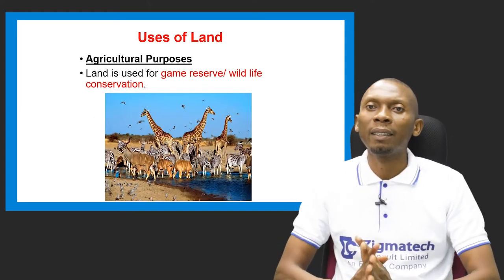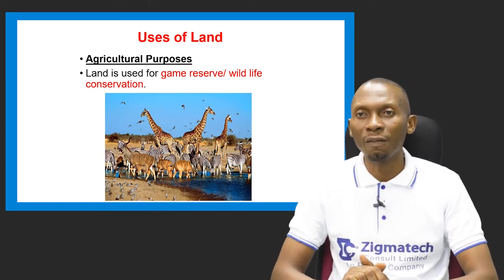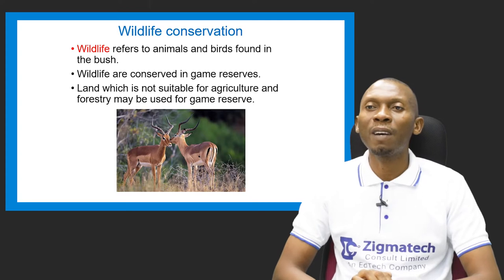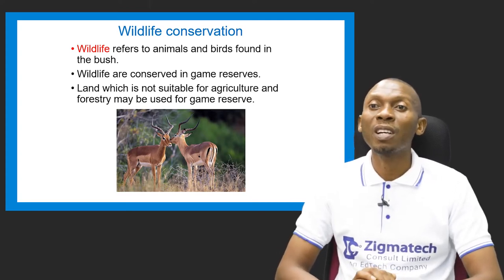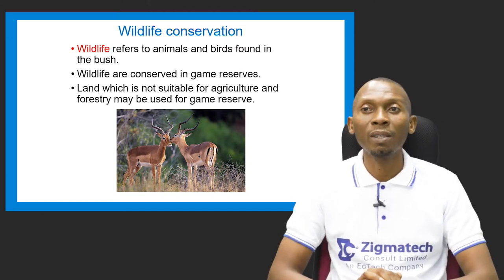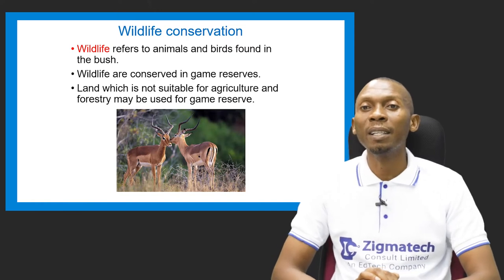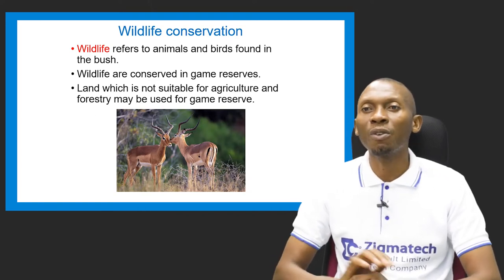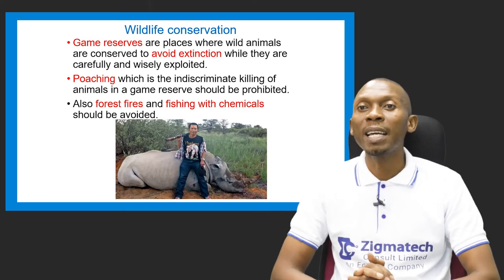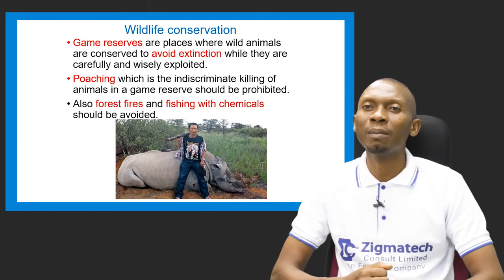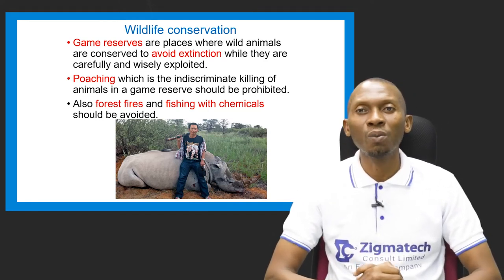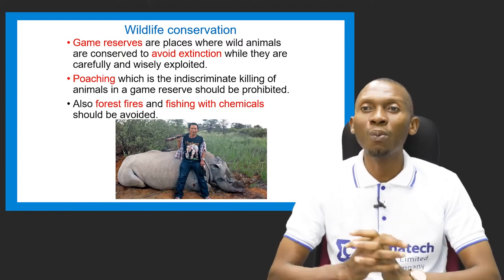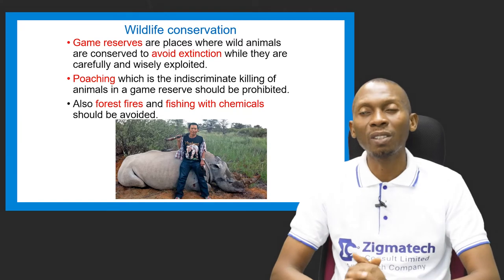Land can be used for game reserves or wildlife conservation. Wildlife refers to animals and birds found in the bush. Lands not usually suitable for agriculture or forestry are used for game reserves — places where wild animals are conserved to avoid extinction while being carefully and wisely exploited.